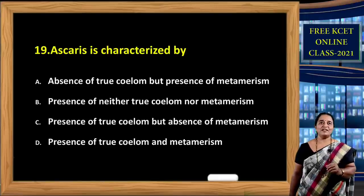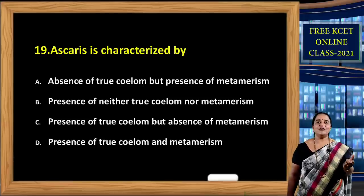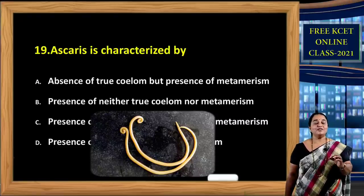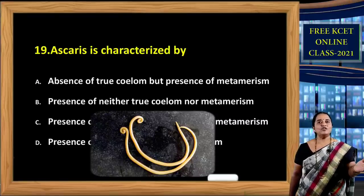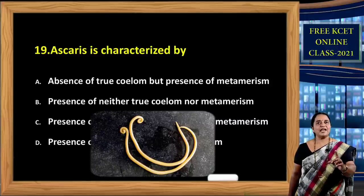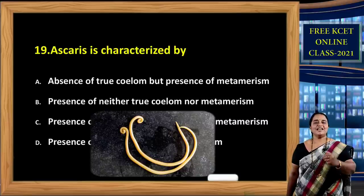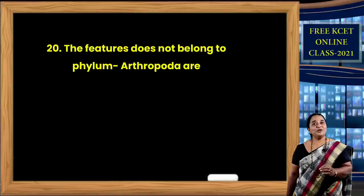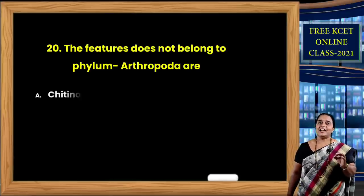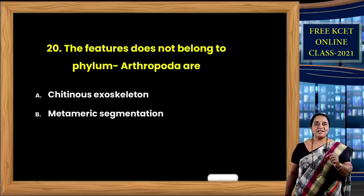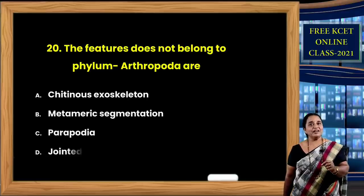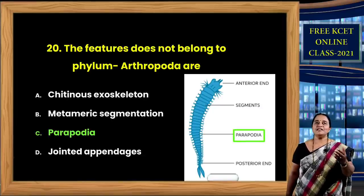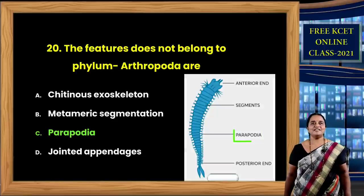Ascaris belongs to phylum aschelminthes. In aschelminthes, all animals are pseudocoelomates — meaning true coelom is absent. The body is also unsegmented. So the correct option is B: presence of neither true coelom nor metamerism. Question 20: The feature that does NOT belong to phylum arthropoda — options: chitinous exoskeleton; metameric segmentation; parapodia/jointed appendages. The correct option is C — parapodia — as these locomotory structures are not found in arthropodans.